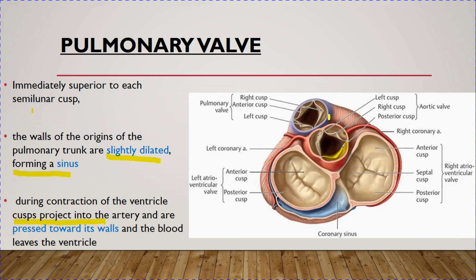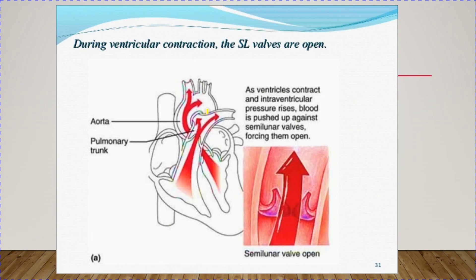You can clearly see the three cusps of the pulmonary valve — anterior, right, and left cusps. When the valve opens, the cusps are projected into the artery and pressed towards its wall, opening the orifice of the pulmonary valve so blood passes into the pulmonary trunk. As the ventricle contracts and intraventricular pressure rises, blood is pushed against the semilunar valves, forcing them open and pressing them against the walls of the pulmonary trunk.